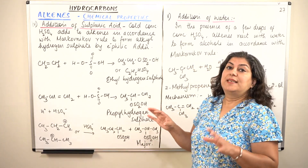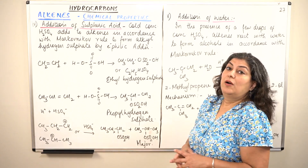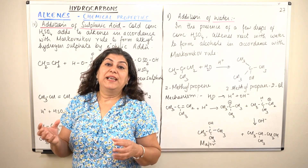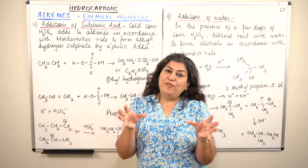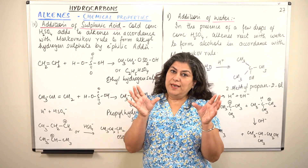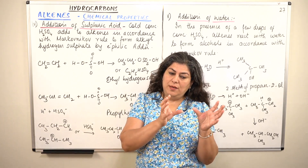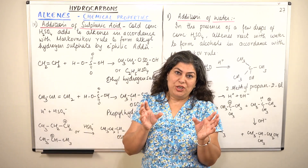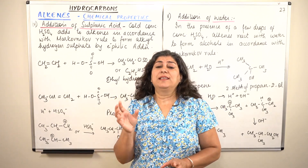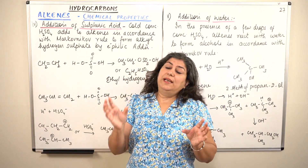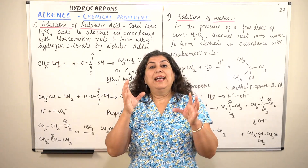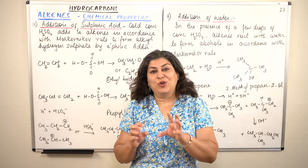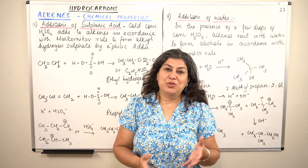The addition of sulfuric acid takes place according to Markovnikov's rule, and it is an electrophilic addition. The addendum — the substance being added — can be divided into a positively charged ion and a negatively charged ion. The positively charged ion is the electrophile, which attacks the alkene first. Whichever carbocation formed is more stable, the negative part adds to it, making that the major product.